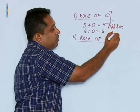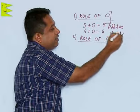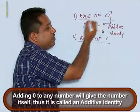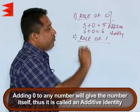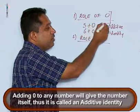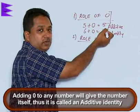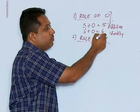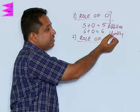Why is it called an additive identity? When we add 0 to a number, we are getting the number itself. But if you multiply, let us say 5 into 0, we are not going to get the number, we are going to get 0. So it is not true for multiplication, it is only true for addition. 0 is an additive identity.